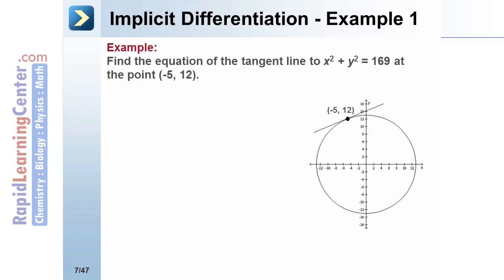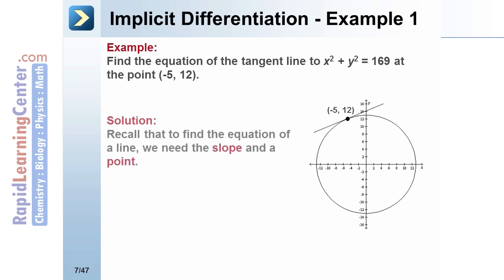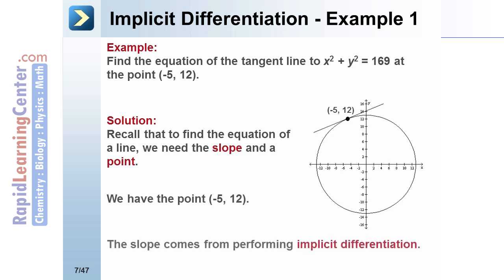Let's look at an example of implicit differentiation. We want to find the equation of the tangent line to x squared plus y squared equals 169 at the point negative 5, 12. You can see we have a circle with the point negative 5, 12 marked on that circle and the tangent line drawn through it. Recall that to find the equation of a line we need a slope and a point, and the slope comes from performing implicit differentiation.